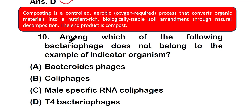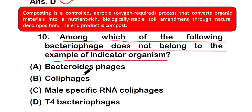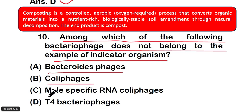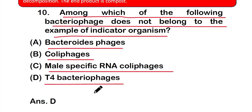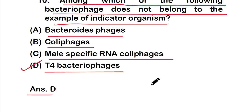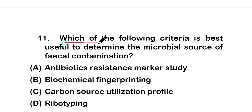Question ten: which of the following bacteriophages does NOT belong to the examples of indicator organisms? Options: Bacteroides phage, coliphage, male-specific RNA coliphages, or T4 bacteriophage. The right answer is option D — T4 bacteriophage is not an example of an indicator organism.